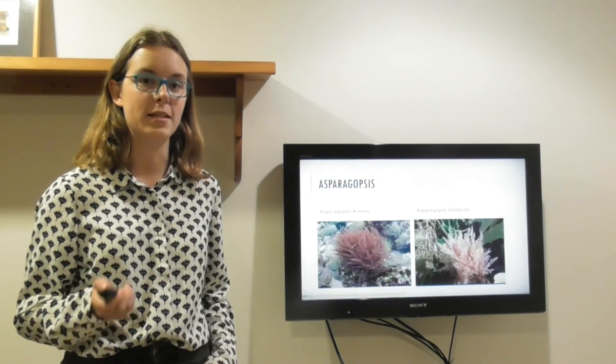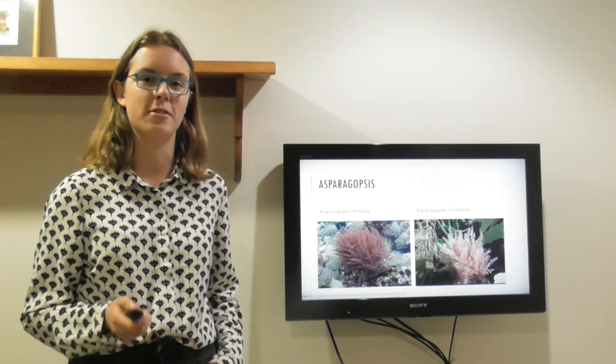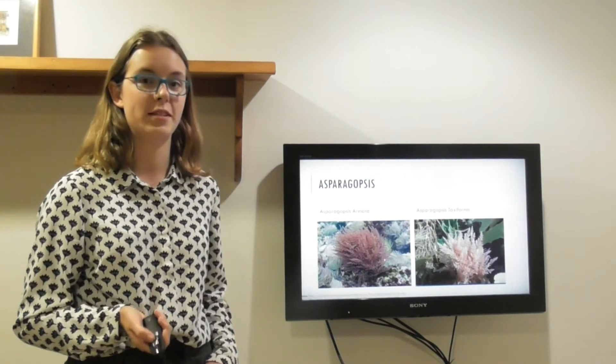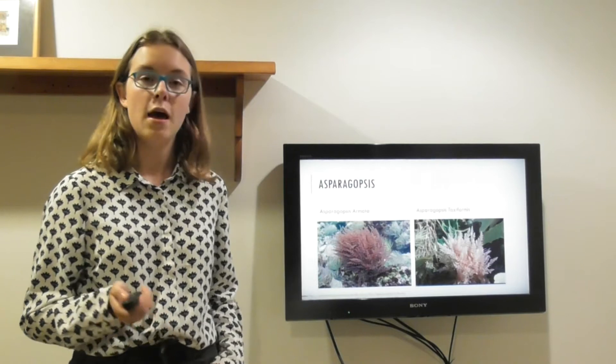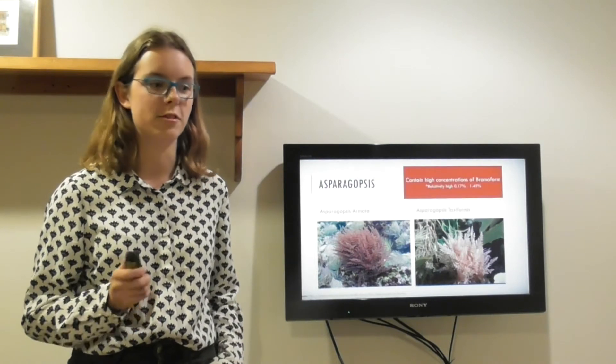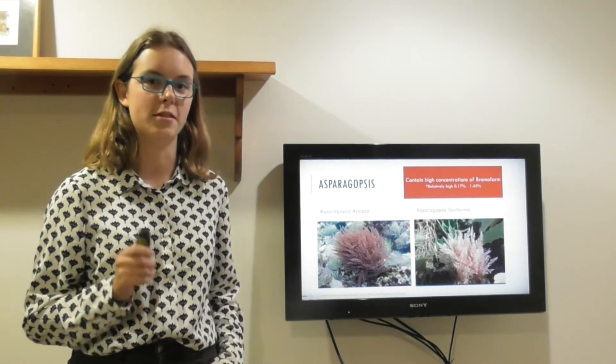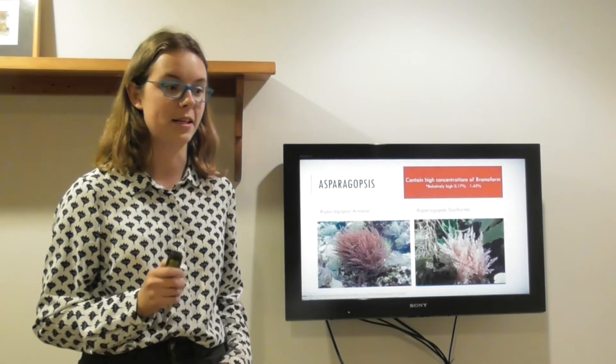There are two species of Asparagopsis. Asparagopsis armata, which grows in temperate climates like that of New Zealand, and Asparagopsis taxiformis, its tropical cousin. Both get their red colour from high concentrations of bromoform, which is used as a defence mechanism, and it's also this property that allows it to reduce methane emissions, as we'll see later.